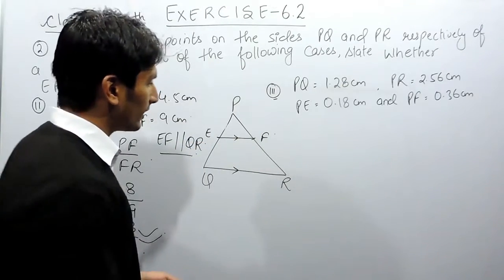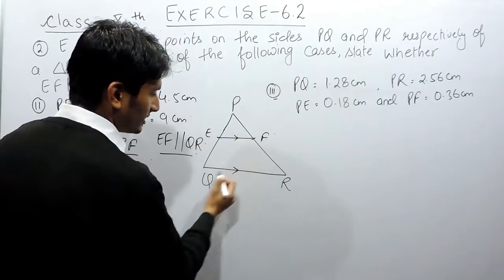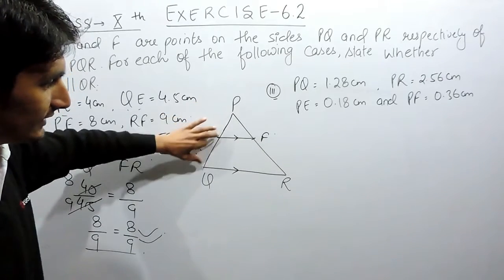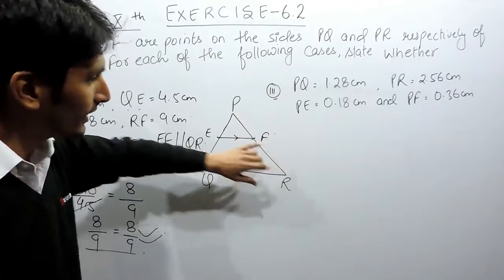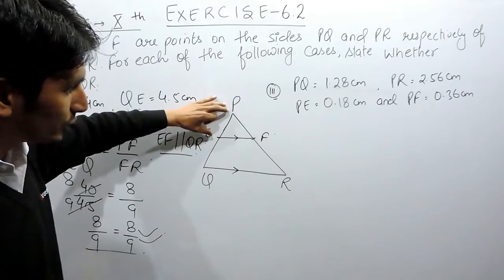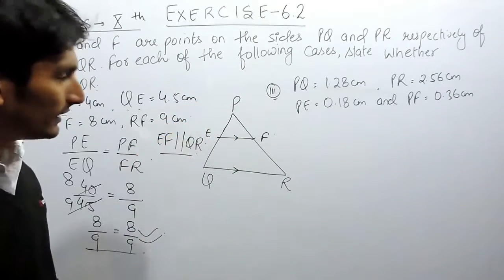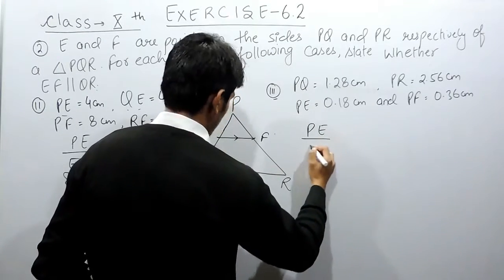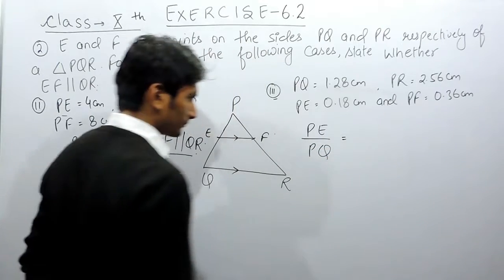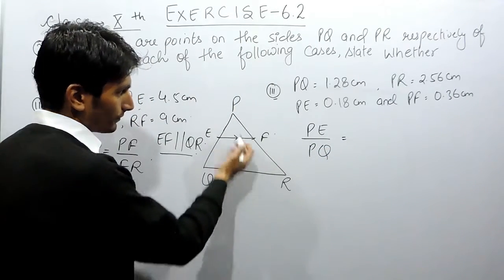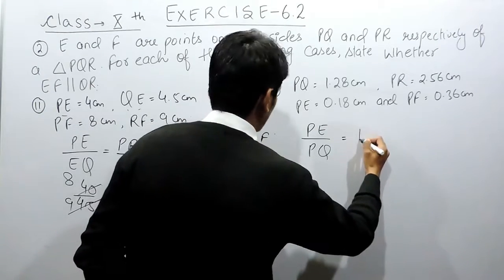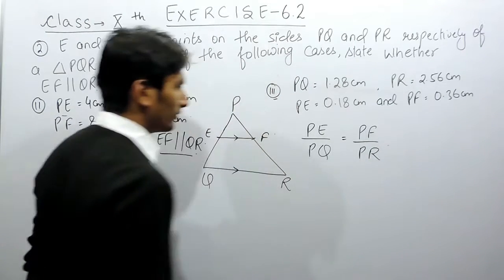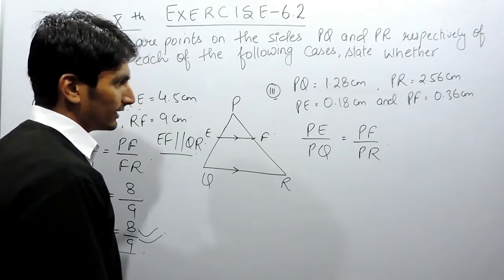Similarly, in this third part you also have to prove that EF is parallel to QR. For that you have to prove that the ratio PE upon EQ is equal to PF upon FR, which can also be written as PE upon PQ equal to PF upon PR.